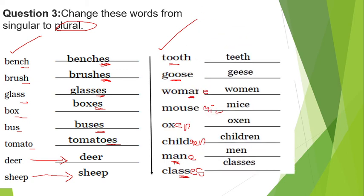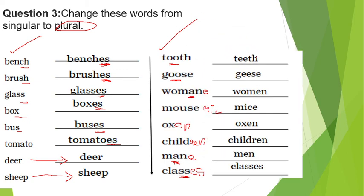Let's see, here is the clarity: tooth becomes teeth, O to E. Goose to geese, E to E. Mouse to mice. Ox to oxen. Child to children. Man to men. Class to classes. This exercise is now finished.